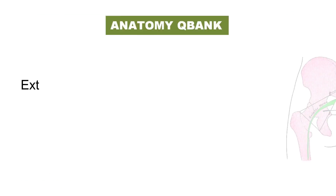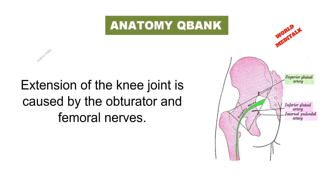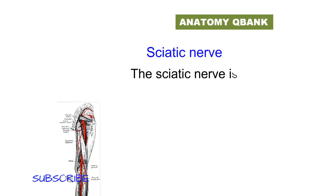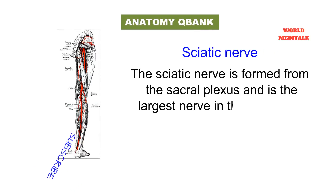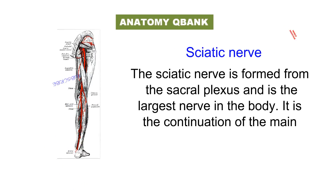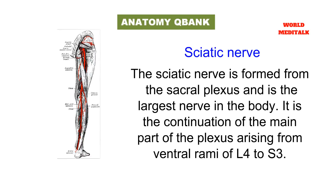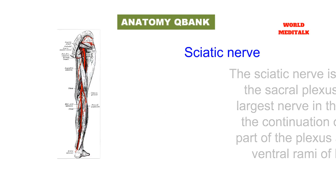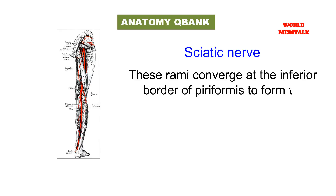Extension of the knee joint is caused by the obturator and femoral nerve, not the sciatic nerve. The sciatic nerve is formed from the sacral plexus and is the largest nerve in the body. It is a continuation of the main part of the plexus, arising from the ventral ramus of L4 to S3.